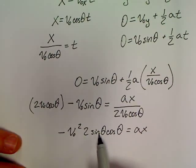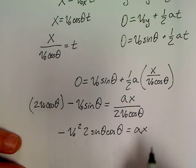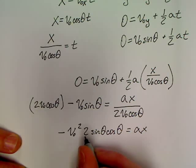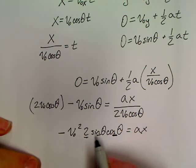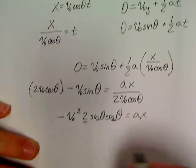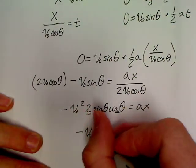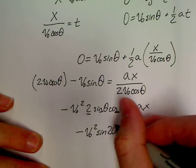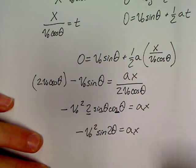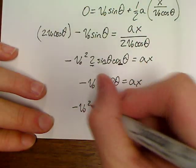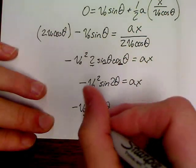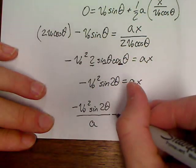Now, the problem most people have is a lot of times these problems won't give you theta. You've got to recognize 2 sin θ cos θ. Now, go back to that trig class that you thought you never used and know that 2 sin θ cos θ is a trig identity. This is equal to sin of 2θ. So, negative V0 squared sin 2θ equals a x. If you're looking for x divided by a, and you have negative V0 squared sin 2θ over a equals x.